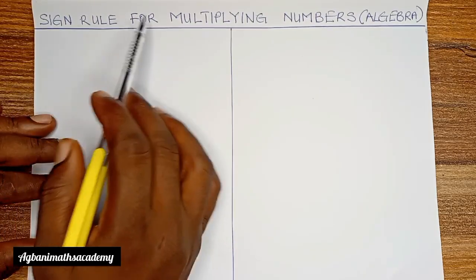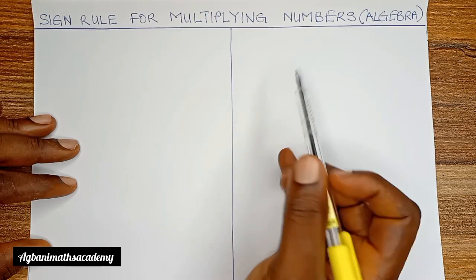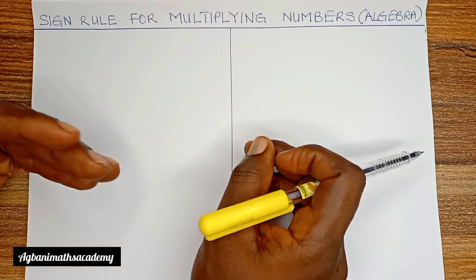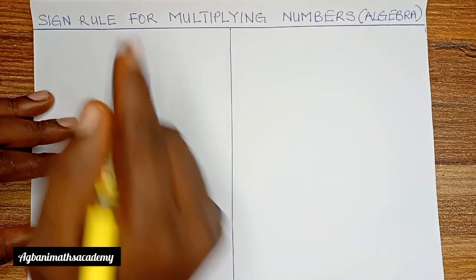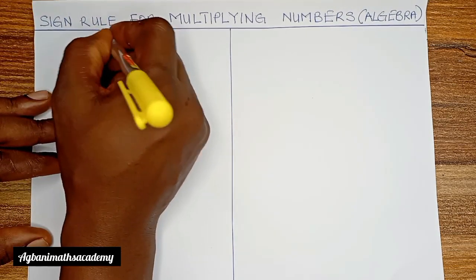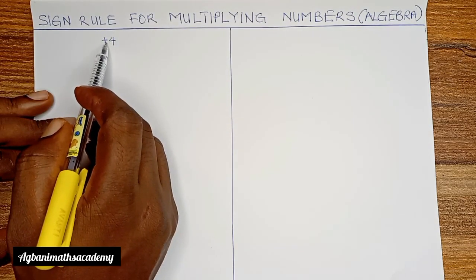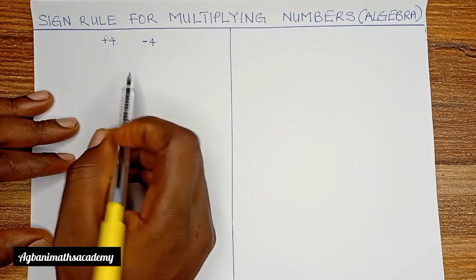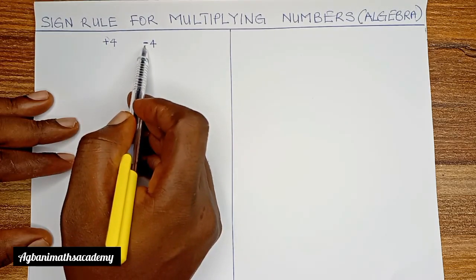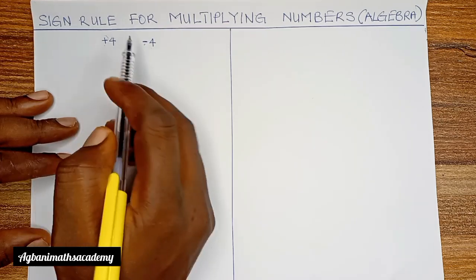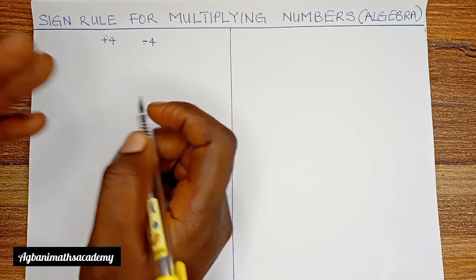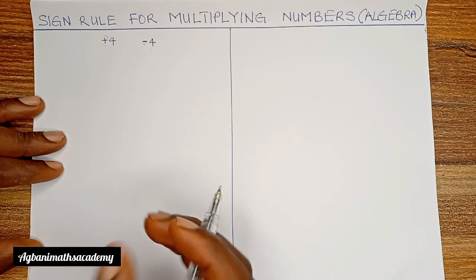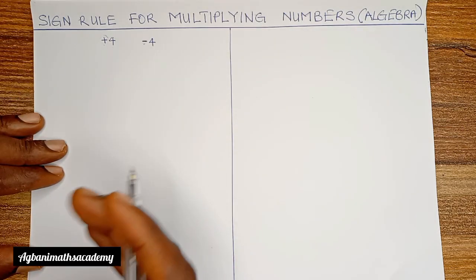Hi guys, in this video we're going to be looking at the sign rule for multiplying numbers or algebra. Whenever you are multiplying numbers together, you must always observe the sign in front of the number or algebra. For example, plus 4 is called plus 4 because of the sign in front of it. This is different from minus 4 — they are not the same numbers. So we are going to look at how to multiply numbers considering the sign in front of them.